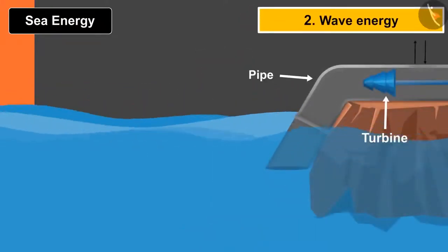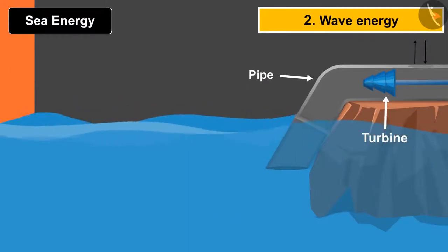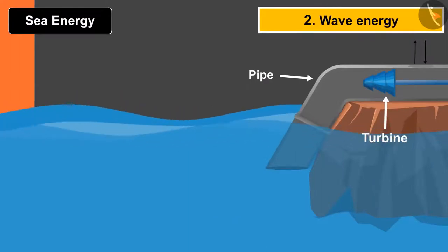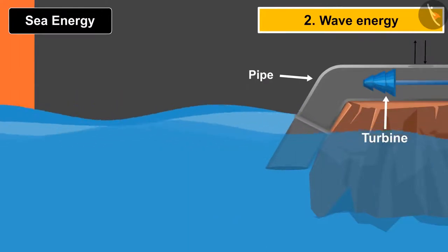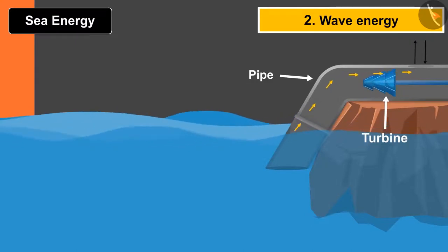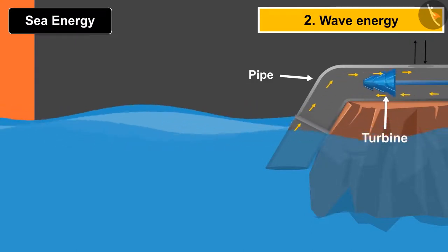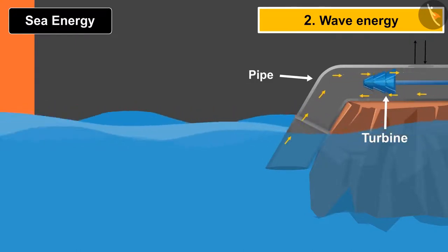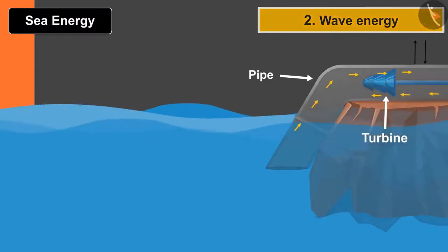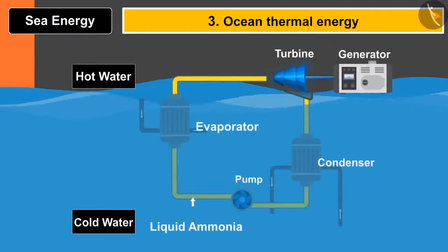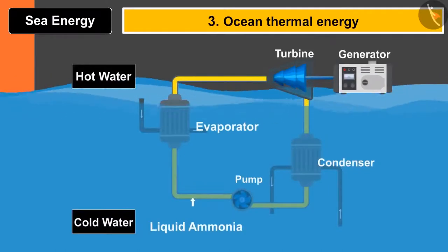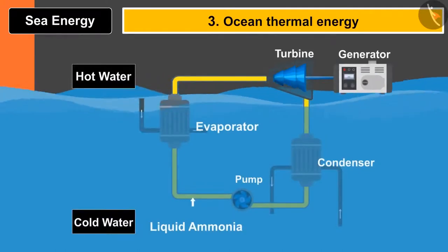In wave energy, a huge pipe is placed near the shore of the ocean. Due to the motion of the waves, the air pressure inside the pipe increases and decreases, causing the turbine blades to rotate and generate electricity.